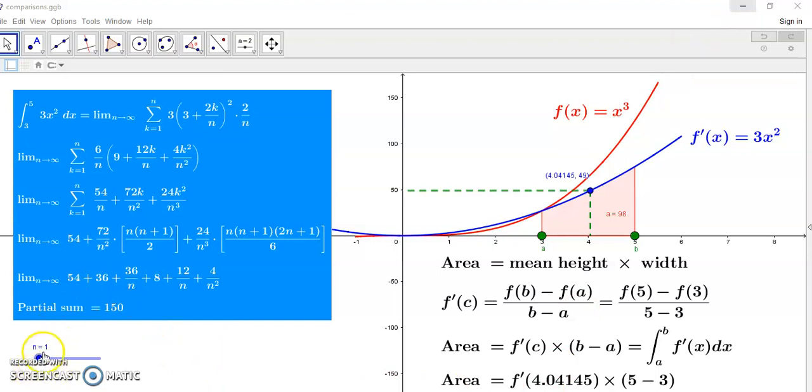Because ultimately, as n gets very large—and n is reflected here—as it gets very large, these values here, which have an n in the denominator, get closer to zero. And so, supposedly, all that remains is 54, 36, and 8.